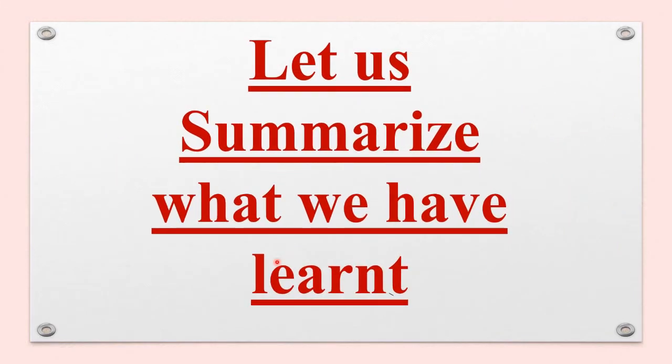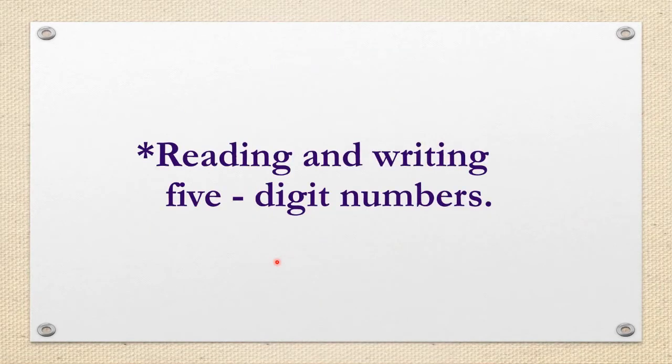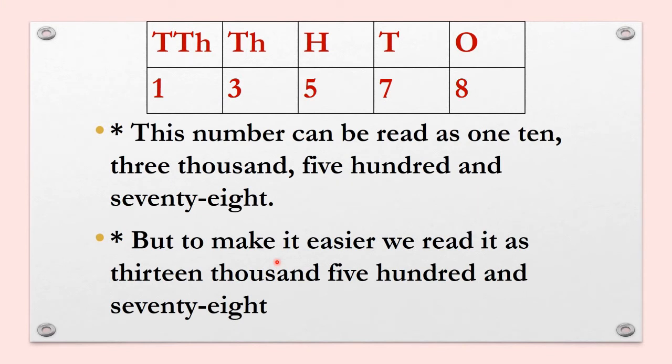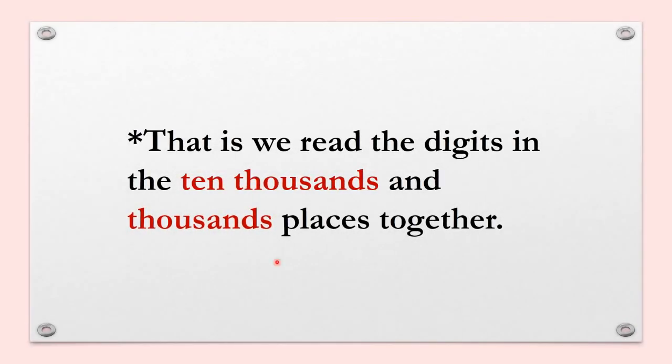Let us summarize what we have learned: reading and writing 5-digit numbers. We write the number 1, 3, 5, 7, 8 in the place value chart as digit 8 in 1's place, 7 in 10's place, 5 in 100's place, 3 in 1000's place, 1 in 10,000's place. So this number can be read as one ten, three thousand, five hundred seventy-eight. But to make it easier, we read it as 13,578. That is, we read the digits in the 10,000's and 1000's places together.